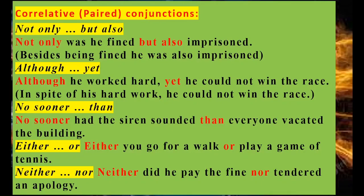Although/yet: although he worked hard, yet he could not win the race. In spite of his hard work, he could not win the race. No sooner and then: no sooner had the siren sounded than everyone vacated the building. Either/or: either you go for a walk or play a game of tennis. Neither/nor: neither did he pay the fine nor did he tender an apology. So these are paired conjunctions, or correlative conjunctions, or correlatives.